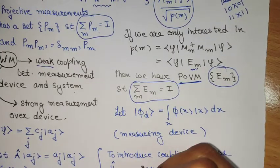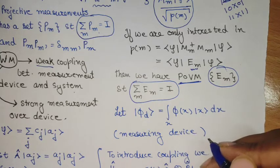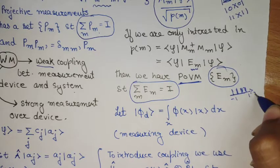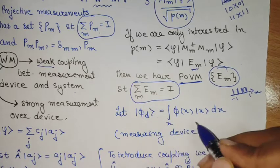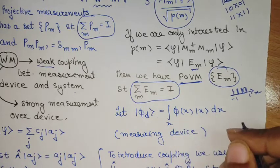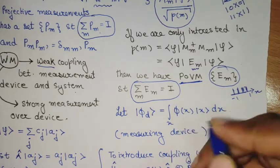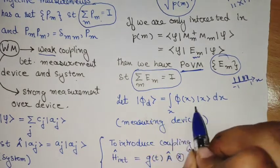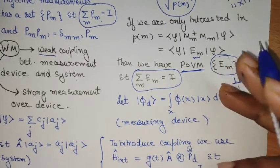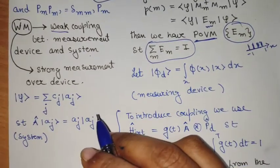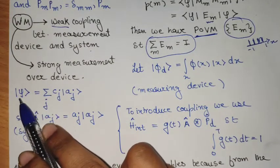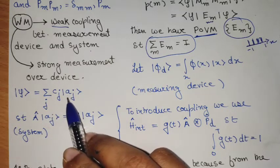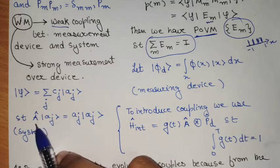We will see that with a particular interaction Hamiltonian which causes this weak coupling. We have a state of the device. Suppose the device is a needle and it varies from minus one to one over the position axis. The state of the device can be written in the form of position kets, where phi is a suitable function — we can take it to be a normalized Gaussian function. This is like the position of the needle that the device is pointing while measuring the state. Now we define the state of the system.